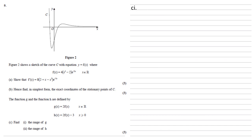The function g and the function h are defined by g of x equals 2 times f of x, x is in the real numbers, and h of x equals 2 times f of x minus 3, for x larger than or equal to zero.